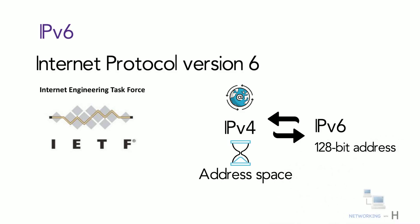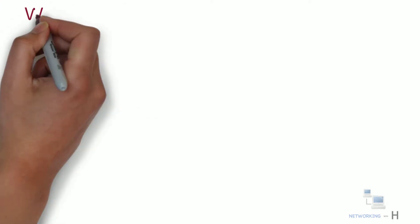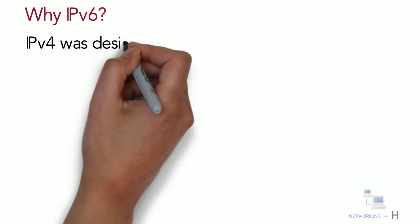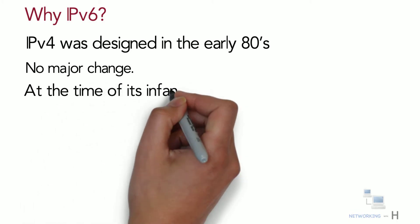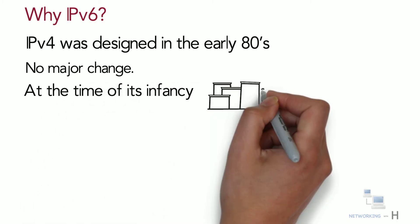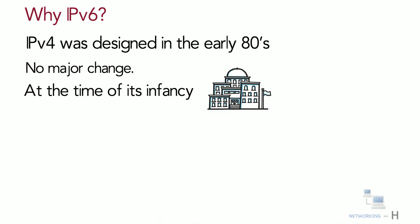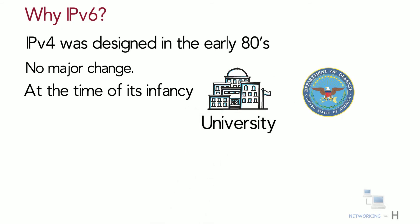IPv6 is a 128-bit address. Why do we need IPv6? IPv4 was designed in the early 80s and did not get any major change afterward. At the time of its infancy, the Internet was limited only to a few universities for their research projects and to the Department of Defense. The Internet Engineering Task Force designed IPv4 in 1981 to allow about 4.3 billion addresses, which seemed a lot at that time.